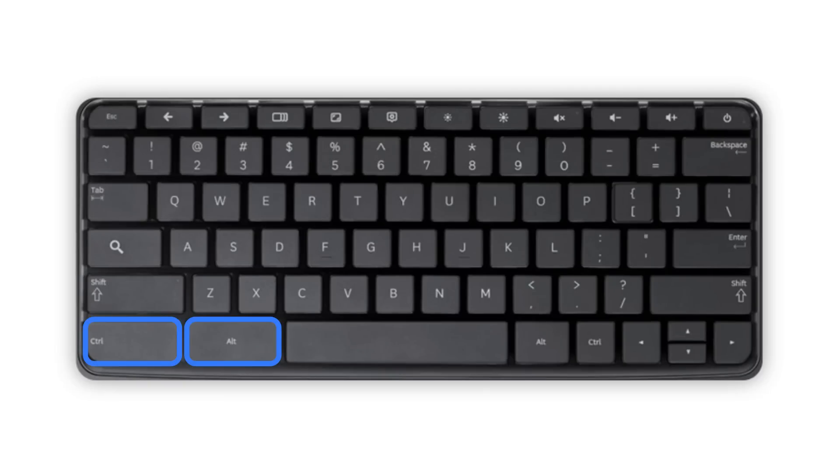ChromeVox comes built into every Chrome OS device, so there's nothing to install. All you need to do to turn on the screen reader is hold down CTRL and ALT and press the letter Z, as in zebra. There are two sets of CTRL and ALT keys on your Chromebook keyboard — in the bottom left corner to the left of the spacebar, and smaller versions directly to the right of the spacebar before the arrow keys.